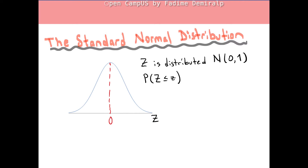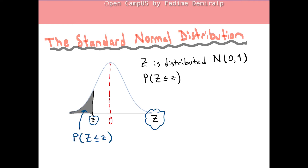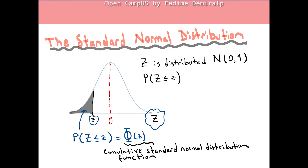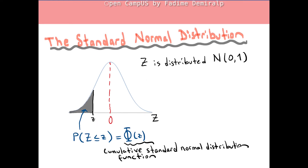Suppose z is a negative number. The area to the left of lowercase z is the probability that Z is less than or equal to lowercase z, which is denoted by Phi(z). Phi(z) is the cumulative standard normal distribution function. We can use the table of cumulative standard normal distribution to calculate the cumulative function at a certain z.